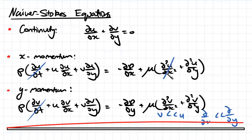We also have no change in our velocity in the y-direction with respect to x or y, and therefore all of those terms cancel out. After we also cancel out the fact that we have no pressure-driven flow, this leaves us with these three terms here in the x-direction and the y-direction.